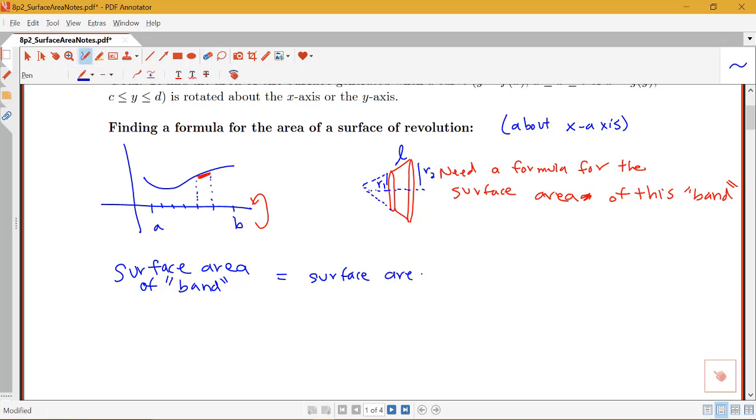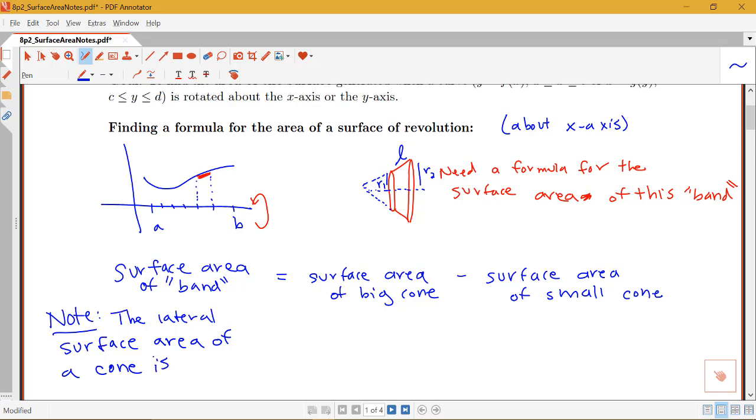So notice that the surface area of the band is going to equal the surface area of a big cone minus the surface area of the small cone. So we need to know the geometric formula for the surface area of a cone. And notice that I actually want just what's called the lateral surface area of the cone, just the outside slanted part of the cone. I don't care about the surface area of a circular base part of the cone because that's not actually part of my surface. My surface will be open at either end. So note that the formula for the lateral surface area of a cone, meaning just the sides, is given by πRL, pi times the radius times the length of the slant along our cone.